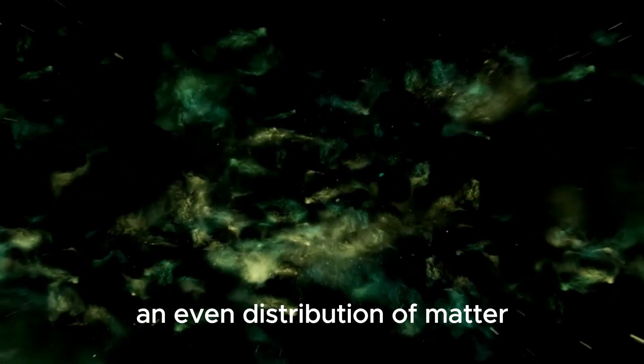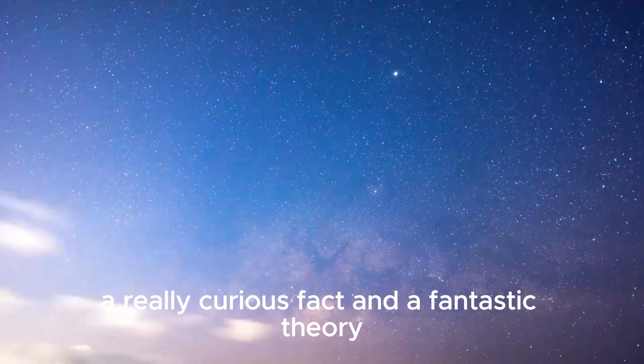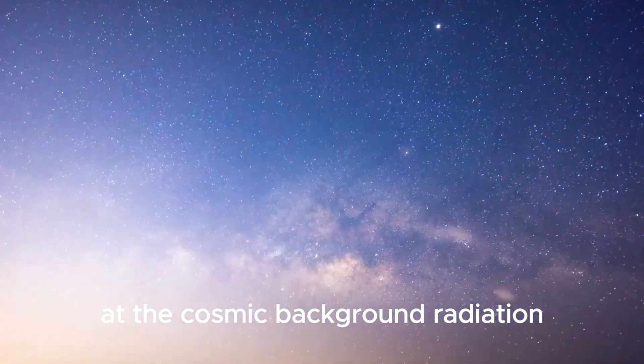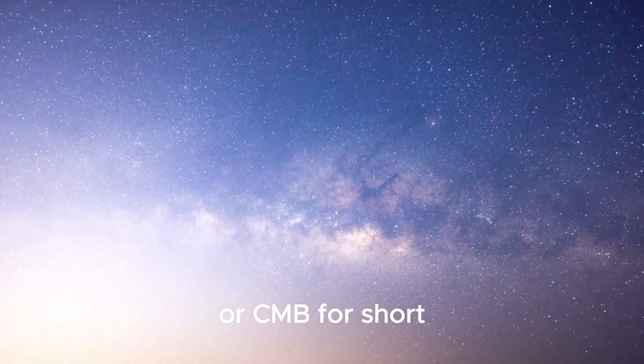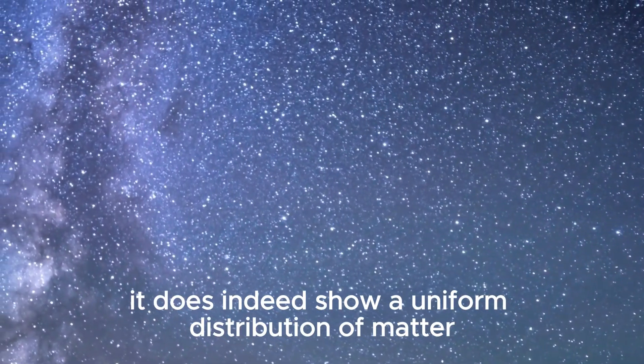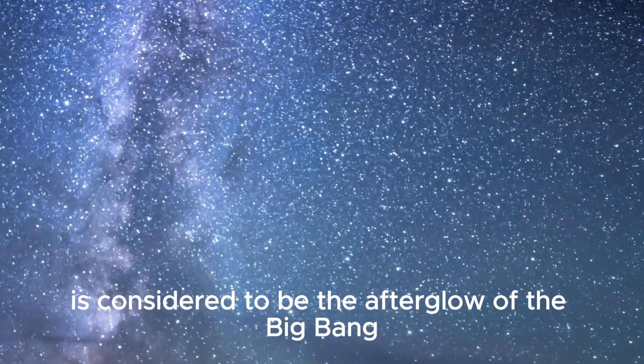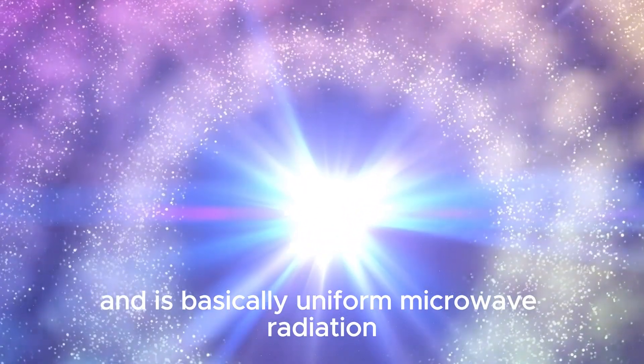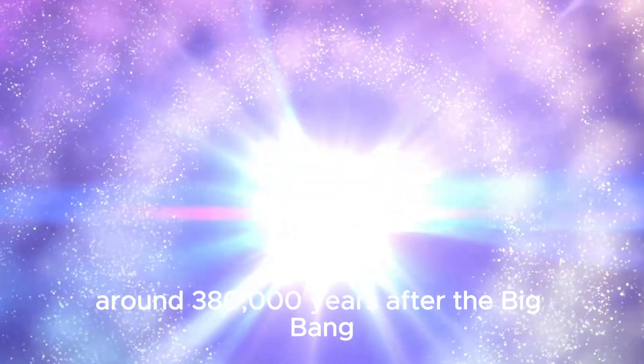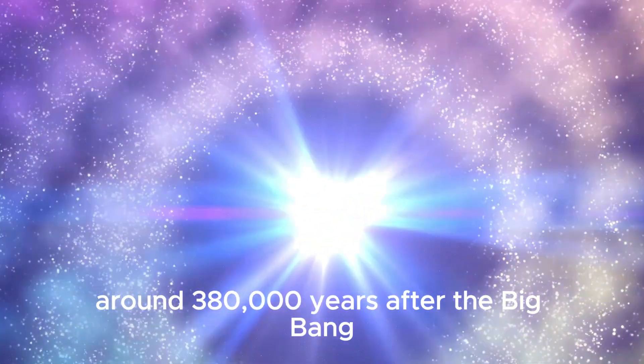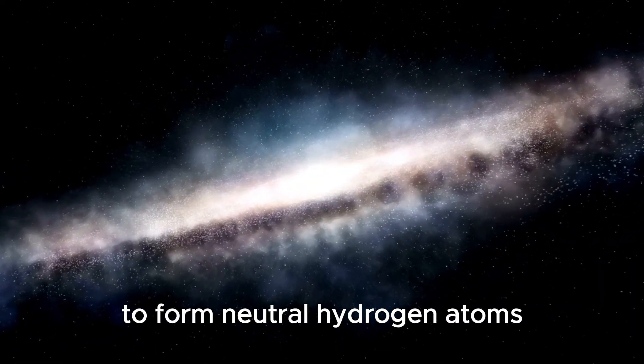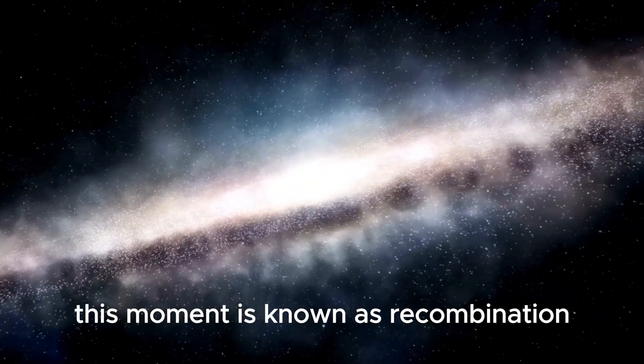Why does the cosmic background radiation show an even distribution of matter? Let's take another look at the cosmic background radiation, or CMB for short. It does indeed show a uniform distribution of matter. The CMB is considered to be the afterglow of the Big Bang and is basically uniform microwave radiation. The radiation originated around 380,000 years after the Big Bang when the universe had cooled enough for protons and electrons to combine to form neutral hydrogen atoms. This moment is known as recombination.